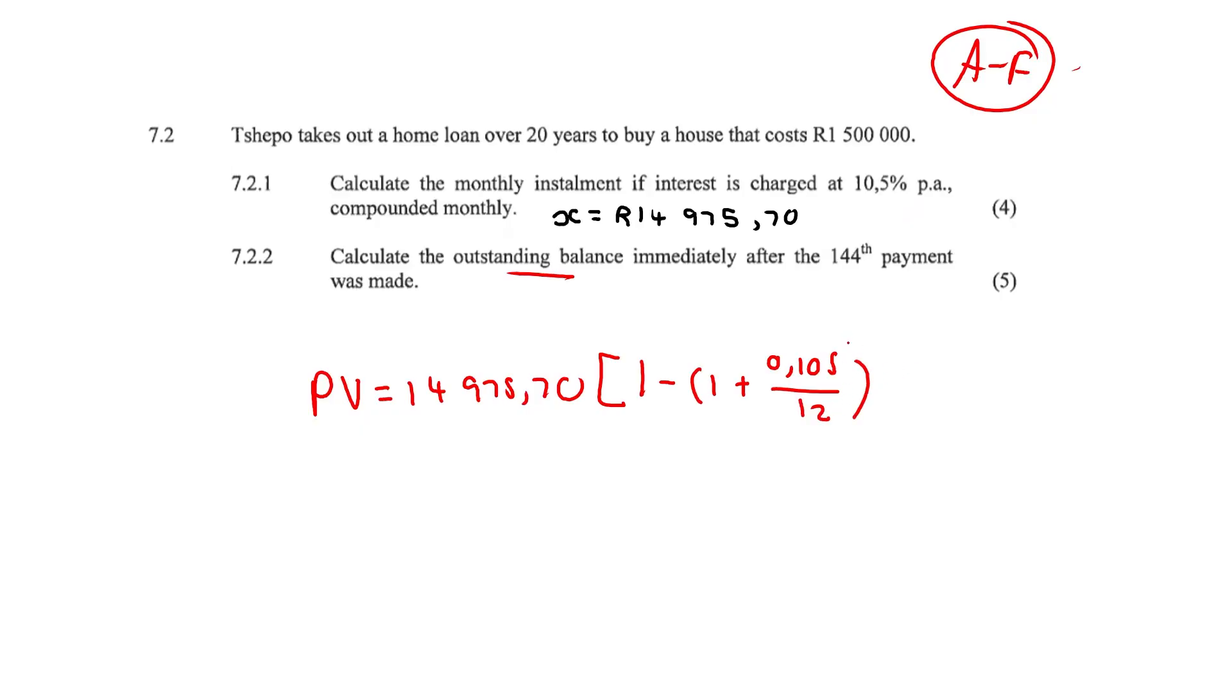But this is the kicker, everybody. This is where everything changes. Our end value is the remaining payments. So calculate the outstanding balance immediately after the 144th payment was made. So to calculate remaining payments, we take the total payments that were made. So 20 years, monthly payments. So that's going to be 20 times 12 minus 144. And that's how we get remaining payments.